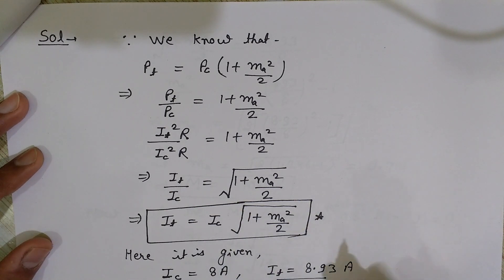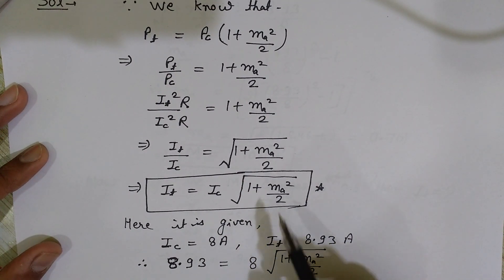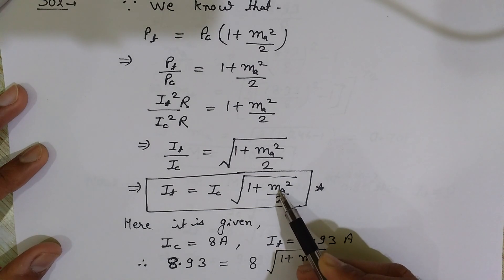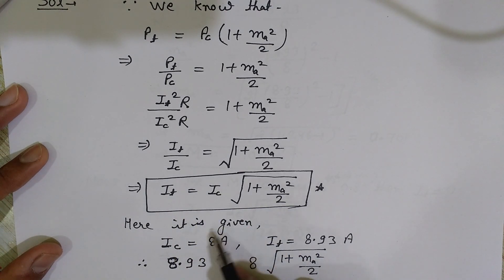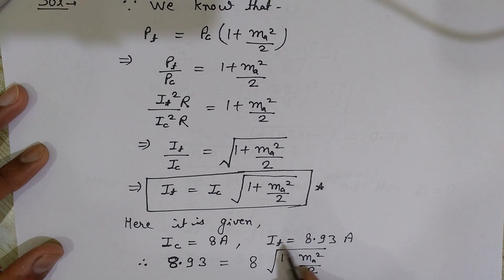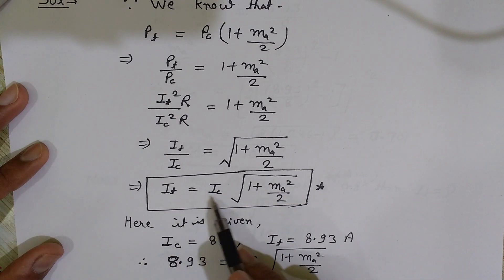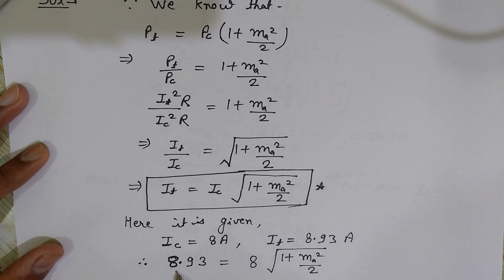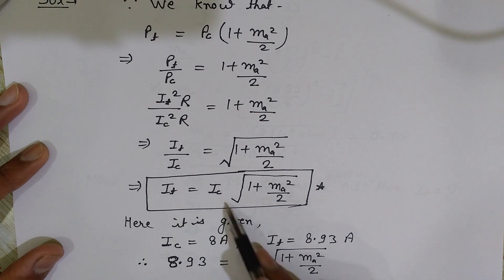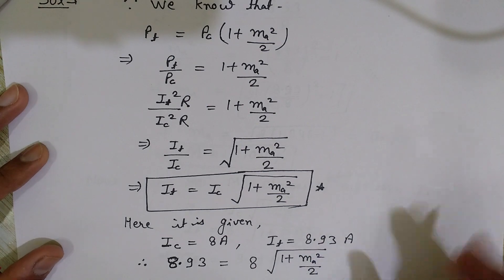For Part 1, I want to find the modulation index ma. I have been given I_C = 8 amperes (antenna current before modulation) and I_T = 8.93 amperes (antenna current after modulation). Substituting these values into the equation: 8.93 = 8 × √(1 + ma² / 2).